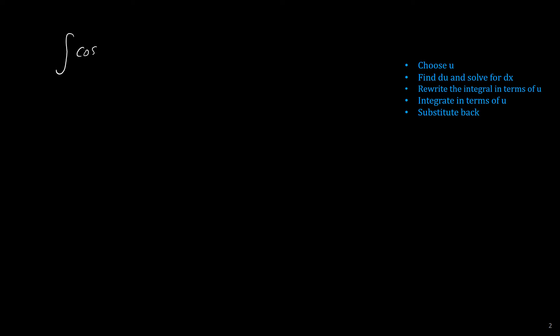Now let me show you another example: the integral of cosine of x times the square root of (2 + sin x) dx. I recommend you pause the video and try to choose u yourself. Remember, the derivative of your u should be the other part of the expression. In this example, u is 2 + sin x.